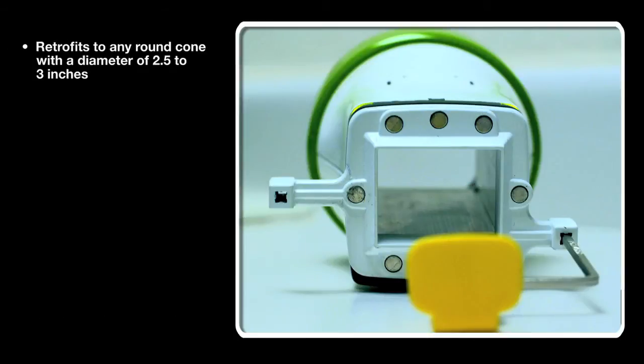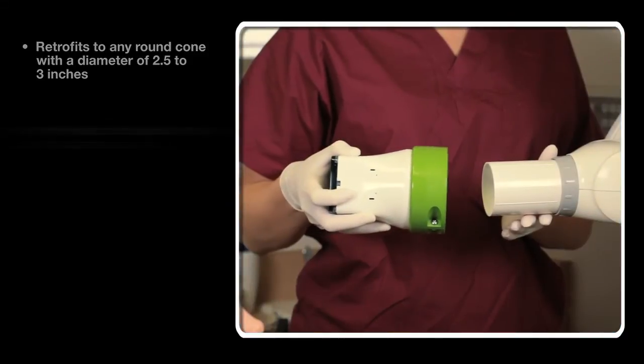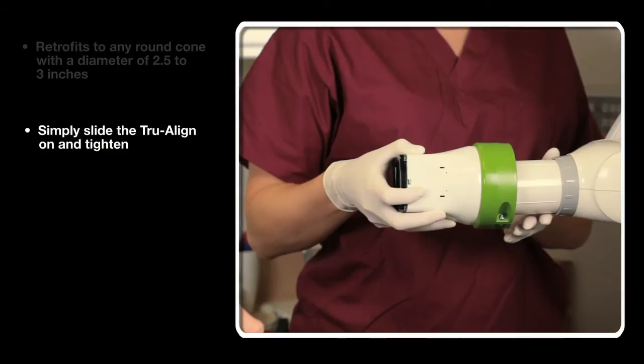TruAlign retrofits to any round cone with a diameter of 2.5 to 3 inches. There's no need to remove the existing cone. Simply slide the TruAlign on and tighten. It literally installs in seconds.